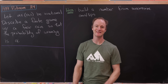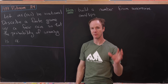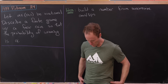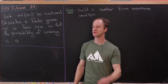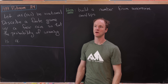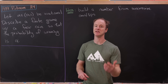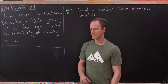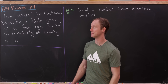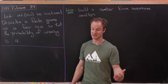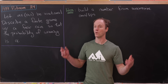Today we've got a really cool problem from the 1989 Putnam — problem number A4. If you know anything about the Putnam, there's a morning session and an afternoon session. The morning problems are numbered A1 to A6 and then B1 to B6 for the afternoon. Generally, A1 is the easiest, so A4 should be one of the middle to harder problems on the exam.